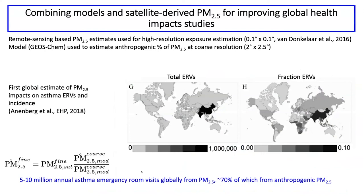Another study using a very similar approach from Susan Anenberg et al. looked at the impact of PM2.5 on emergency room visits associated with asthma — the first global study of PM2.5 impacts on asthma. Again using the combination of models and satellite to estimate exposure at very high spatial resolution while teasing out the anthropogenic component of that exposure, about 70 percent of the five to ten million annual asthma visits may be associated with exposure to anthropogenic PM2.5.